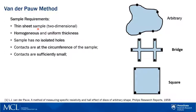The sample should be homogeneous and have uniform thickness without any isolated holes. The electric contacts need to be sufficiently small and located at the circumference of the sample.